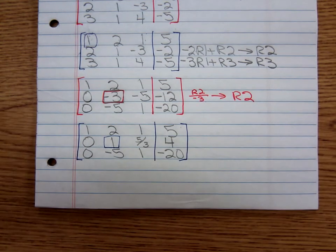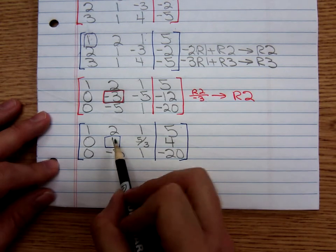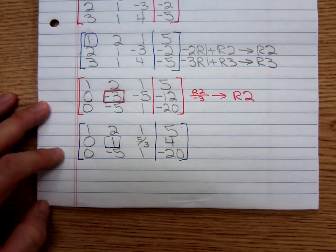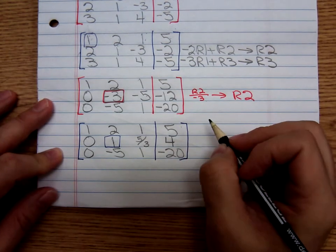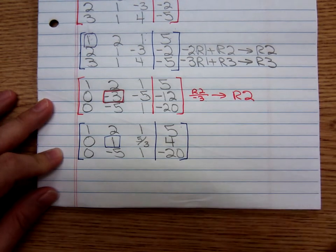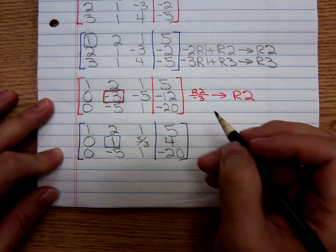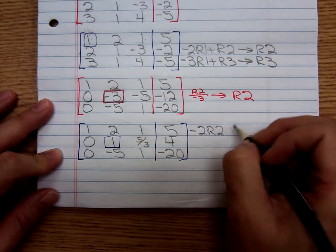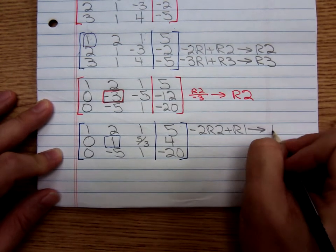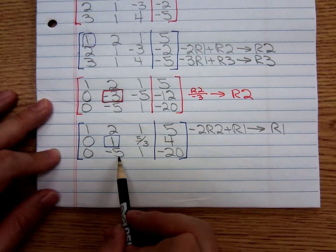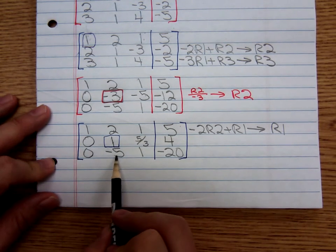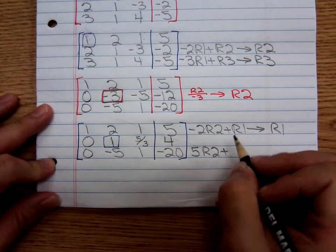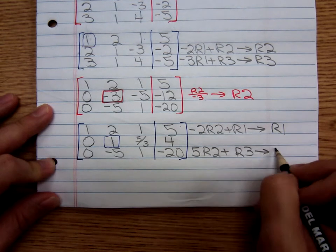We ask ourselves what this number needs to be so that when I add it to positive 2, it'll give me a zero — it needs to be a negative 2. So negative 2 times row 2 plus row 1 gives me a new row 1. What does this number need to be so when I add it to negative 5 it gives me a zero? It needs to be a positive 5, so 5 times row 2 plus row 3 gives me a new row 3.